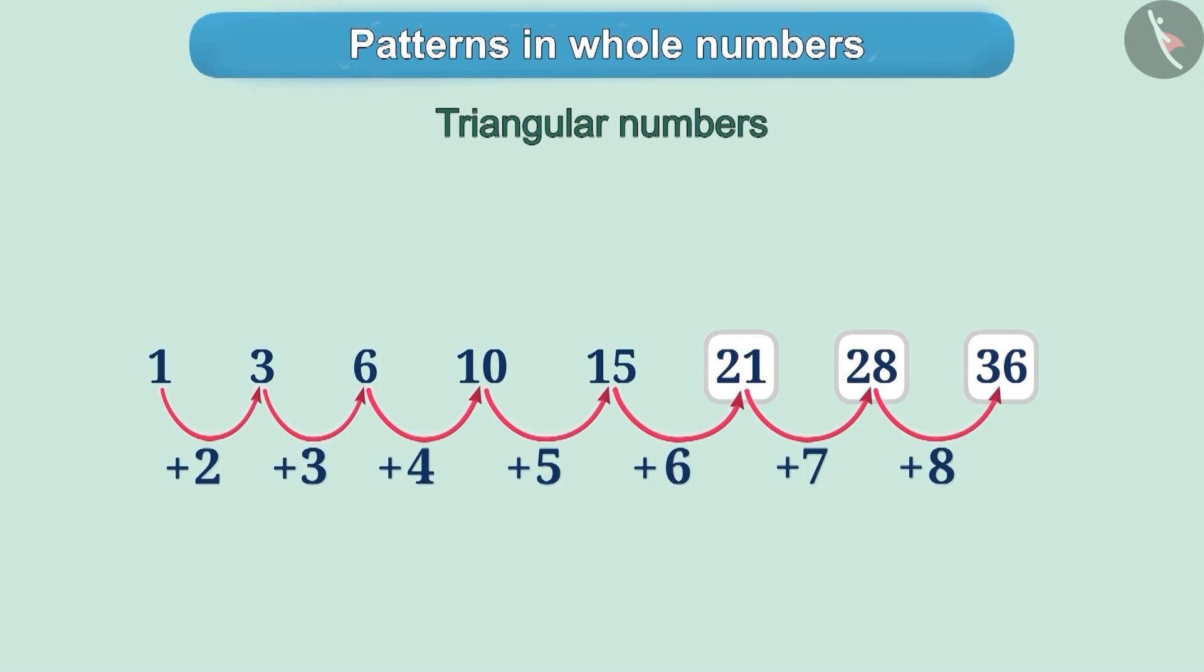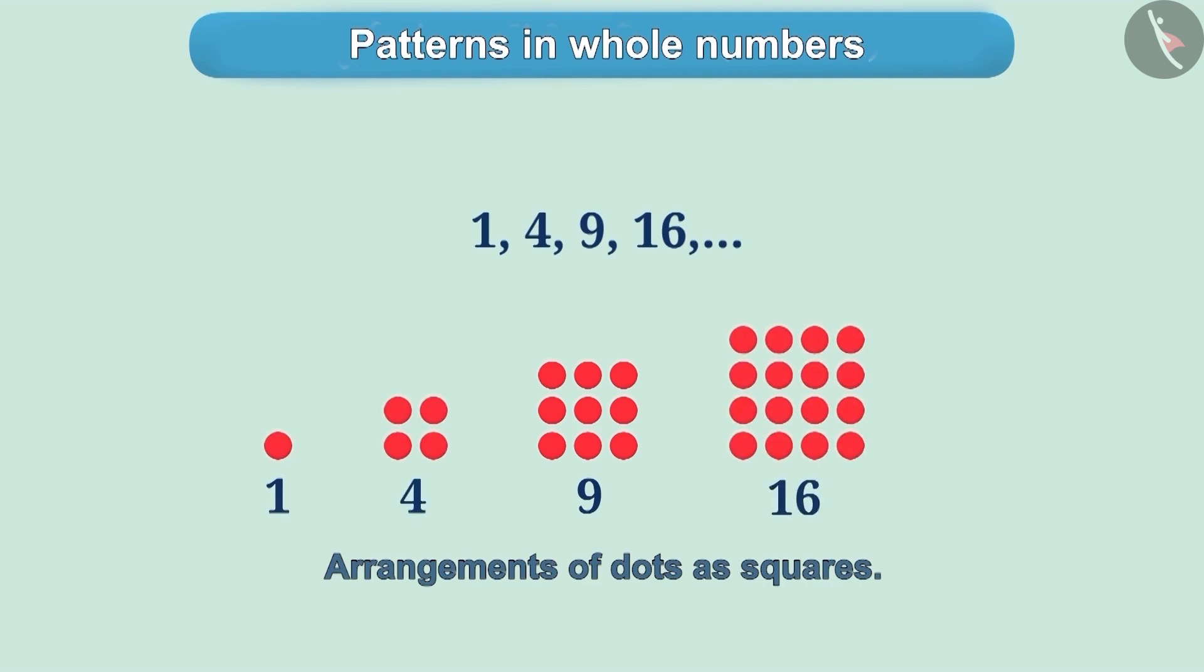Let's consider one more pattern. If we look at any number in the given series 1, 4, 9, 16, etc., it can be represented as squares in an arrangement of dots. Therefore, these numbers are called the square numbers.